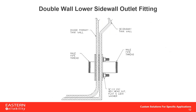For double wall tank applications requiring a lower sidewall outlet fitting, ASVIN offers a double wall metallic fitting. ASVIN's tanks are designed to accept this type of fitting, which utilizes two gaskets — one on the inside of the tank and one in the interstitial area between the two tanks. This is a very nice feature to have if you're trying to draw from the bottom of a double wall tank.